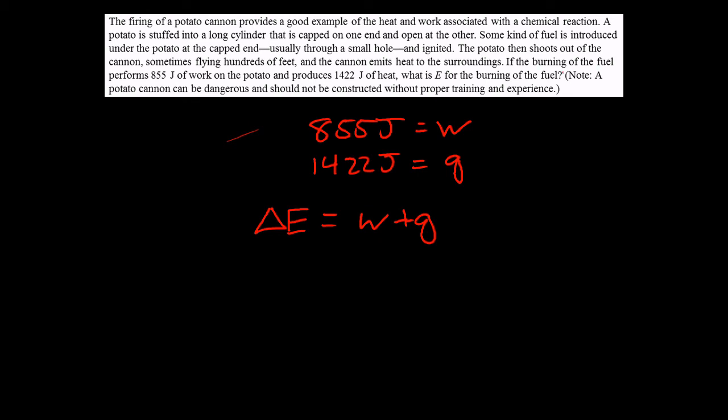Alright, if we look here, it says that the burning of the fuel performs 855 joules of work on the potato. So, since the potato is not our system, the potato is the surroundings, then this is negative work. Our system is doing 855 joules of work on the potato. So, because our system is doing the work on something else, it is negative. The heat says that the burning of the fuel produces 1422 joules of heat. Because that heat is being produced by our fuel burning, that heat is not going into our system. That is the heat being released by our system. And so, this is actually also negative. So, these are both negative.